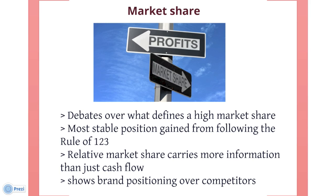What exactly is a high relative share is a matter of some debate. One example is the rule of 1-2-3, which states that the most stable position is for the brand leader to have a share double that of the second brand and triple that of the third. Brand leaders in this position tend to be very stable and profitable. Market share generally indicates likely cash generation because the higher the share, the more cash will be generated as a result of economies of scale. It is assumed that these earnings will grow faster the higher the share.